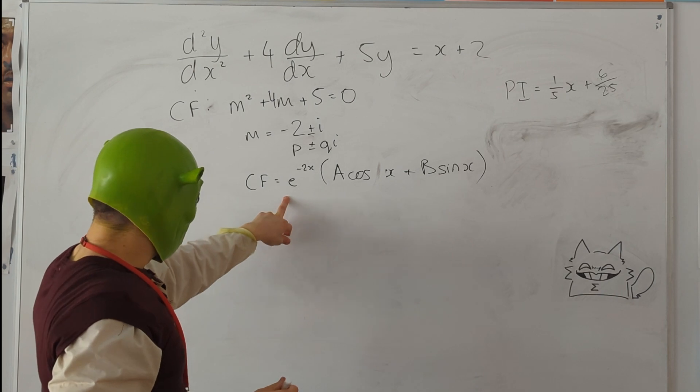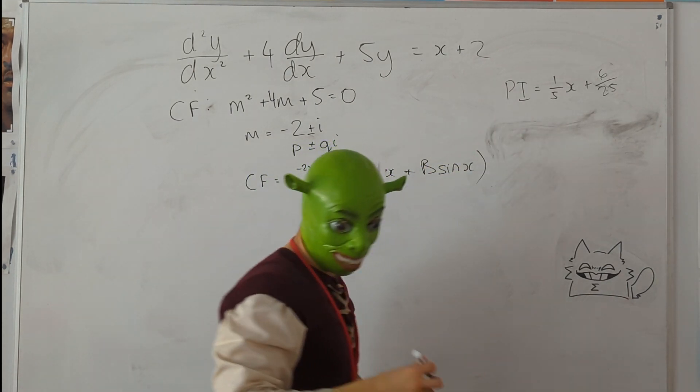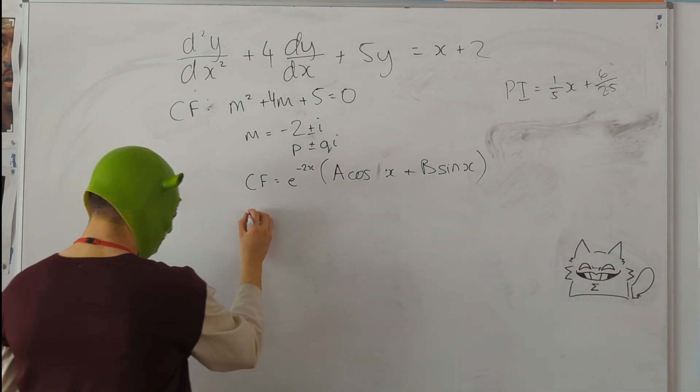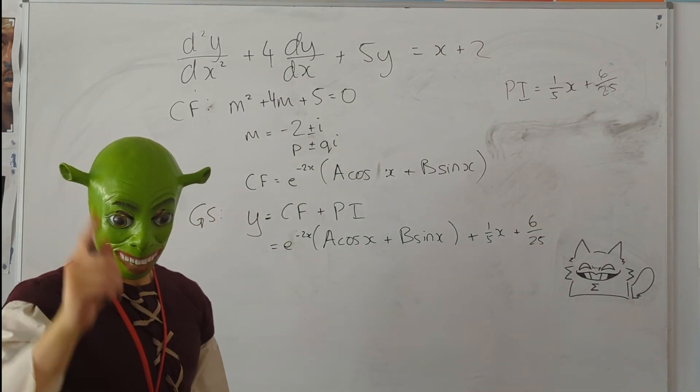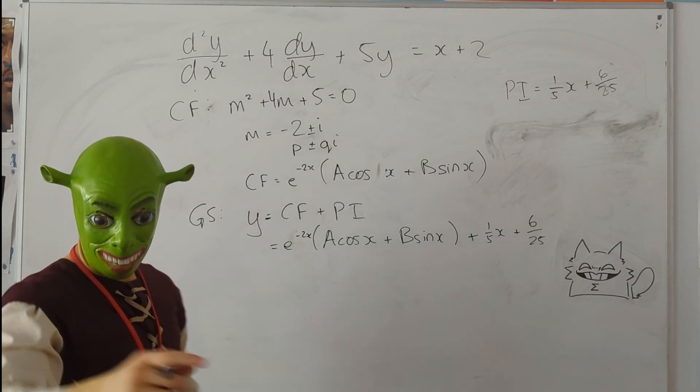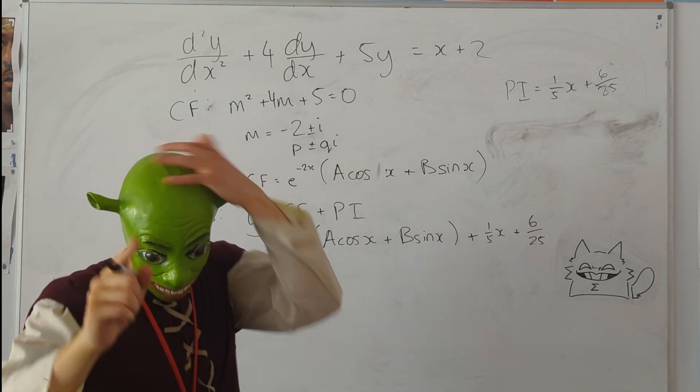Now we know the complementary function, and we know the particular integral. All we have to do to find the general solution is add them together. And voila, that is our general solution to a second order differential equation.